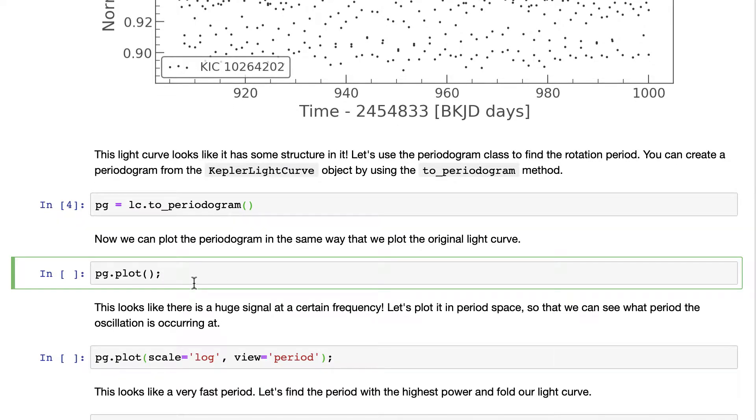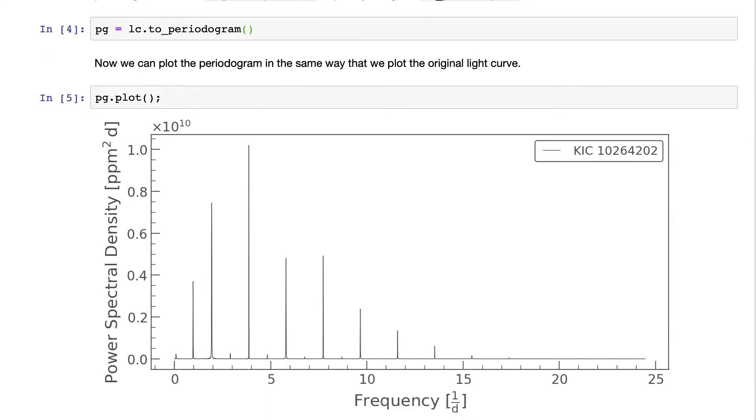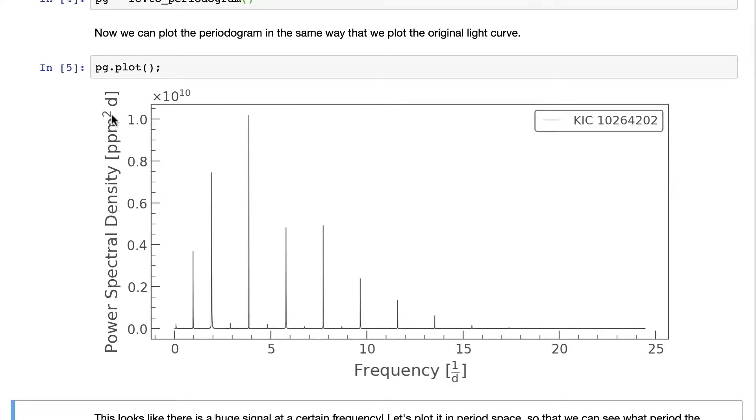And the first thing you might want to do is just look at a plot of the periodogram, and what you get back is the power spectral density. So how much power is on a given frequency. For a given number of cycles per day, higher frequencies are over here. We see that there's a lot of power on these scales.